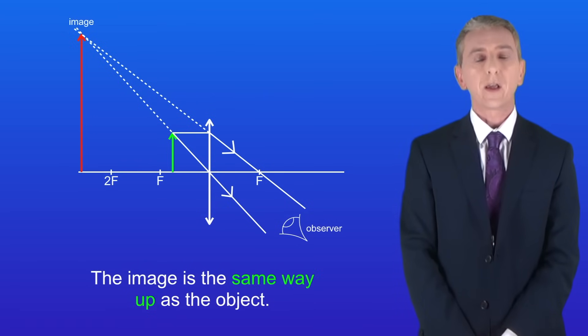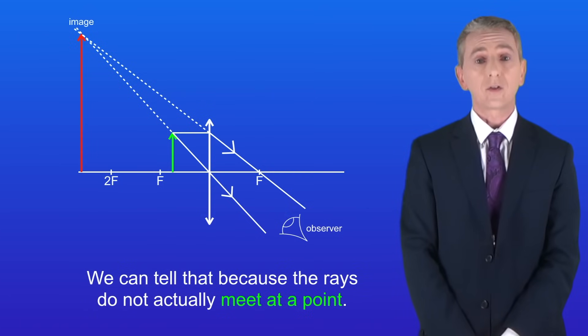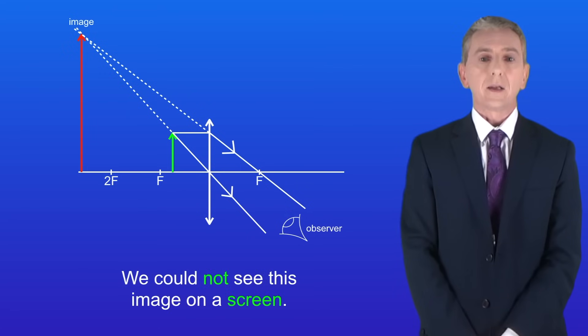Secondly the image is the same way up as the object. And lastly the image is virtual. In other words the image is not real. Now we can tell that because the rays do not actually meet at a point. They only appear to meet. What this means is that we could not see this image on a screen.